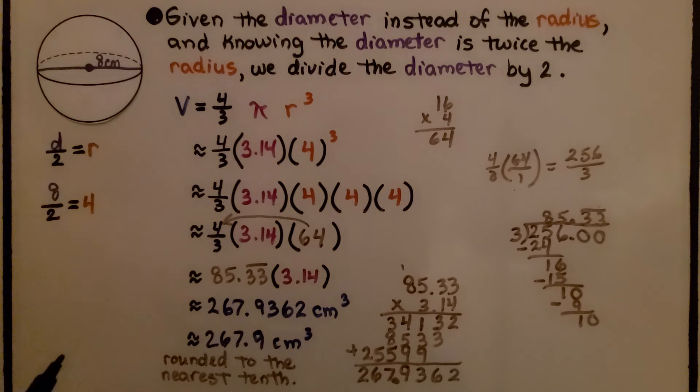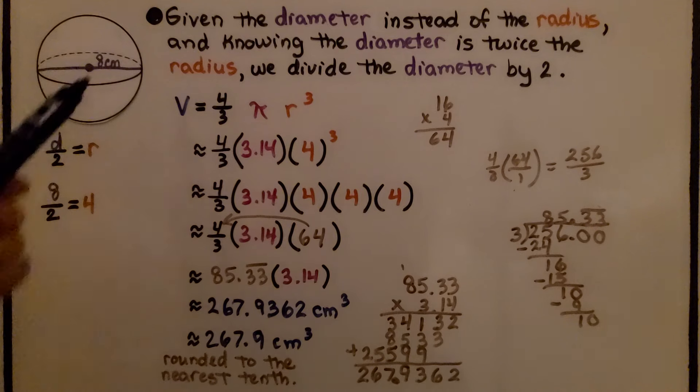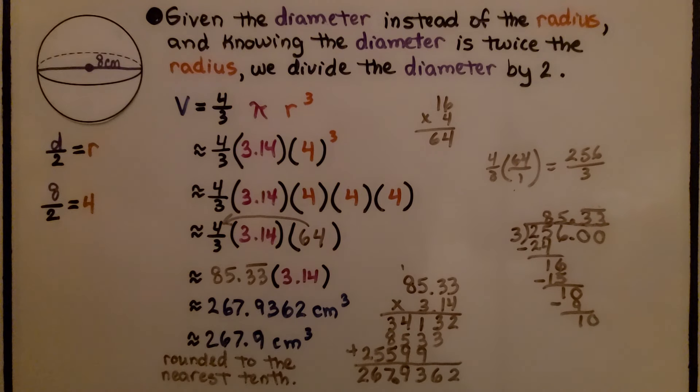But to round it to the nearest tenth, we can just drop these off and get 267.9 centimeters cubed. It's in centimeters, so we do centimeters cubed.